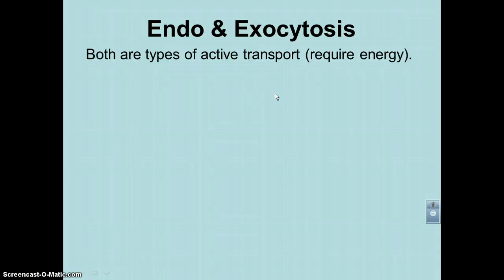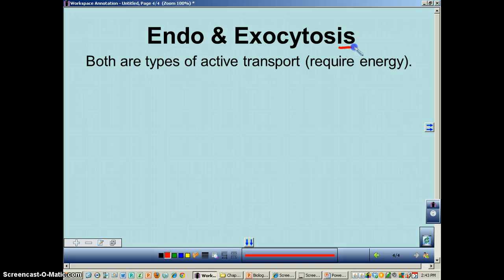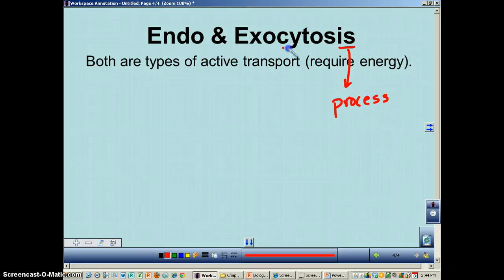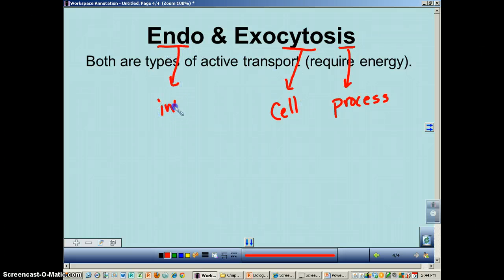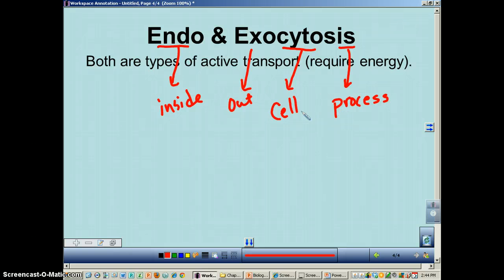Endocytosis and exocytosis are both cellular processes. Looking at the word: the '-osis' at the end simply means process, and the 'cyto' part — C-Y-T-O — refers to cell. Put those together and you have a cell process. 'Endo' means coming inside, and 'exo' means going out. So endocytosis is a process of bringing stuff into the cell, and exocytosis is a process of bringing stuff out of the cell.